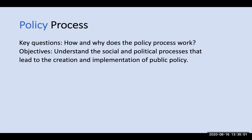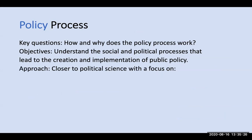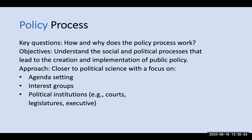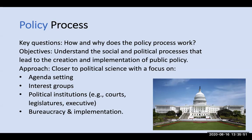Turning to the second major area of inquiry — the policy process — it focuses on key questions such as how and why does the policy process work? The objectives of policy process research are to understand the social and political processes that lead to the creation and implementation of a policy. The approach is a little closer to political science, and policy process research often focuses on agenda setting, interest groups, political institutions — courts, legislatures, the executive branch — and bureaucracy and implementation.